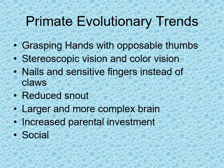Now let's look at primate evolutionary trends. Primates have grasping hands — very flexible hands with opposable thumbs. They also have stereoscopic vision and color vision, nails and sensitive fingers instead of claws, a reduced snout, a larger and more complex brain, increased parental investment, and they are social.